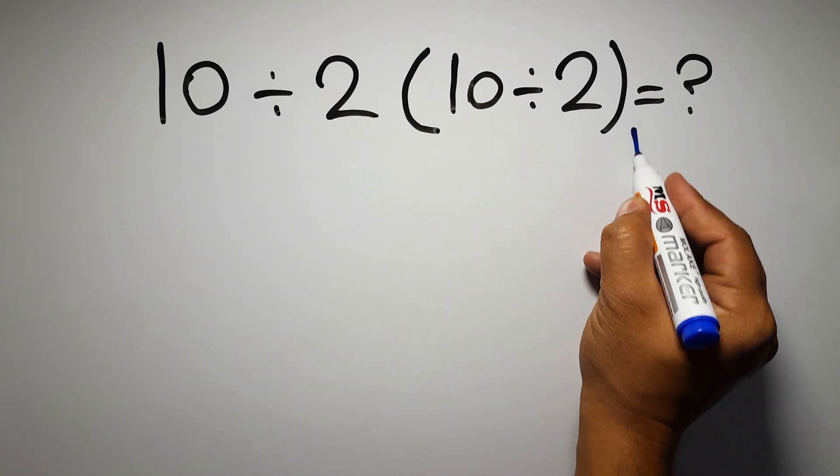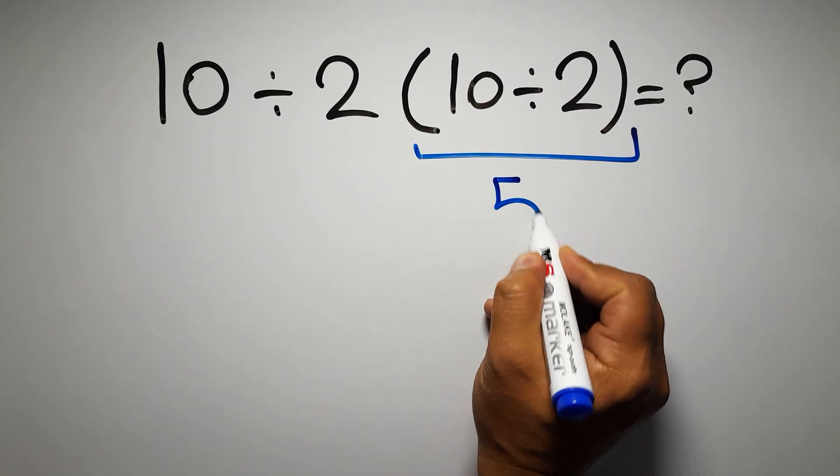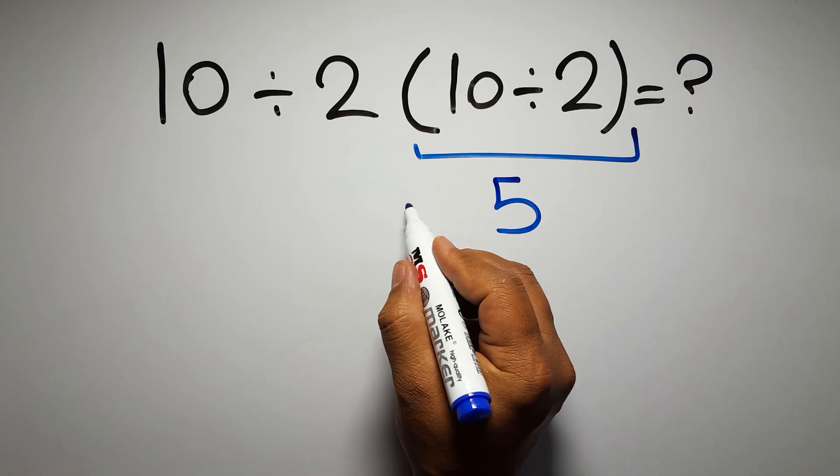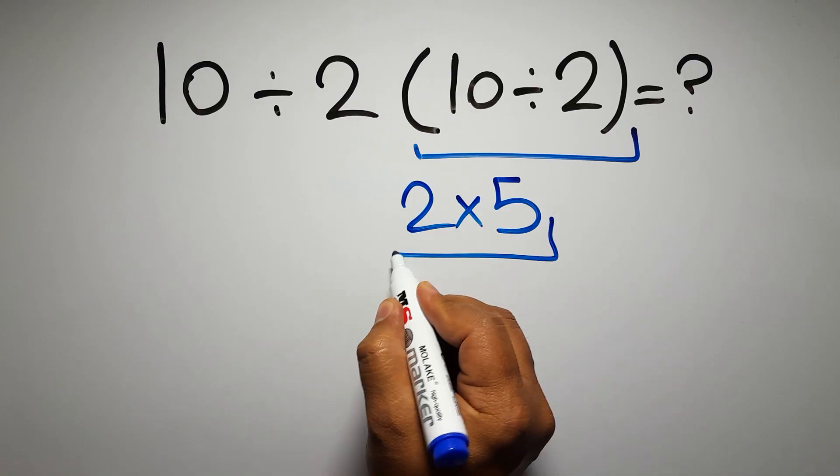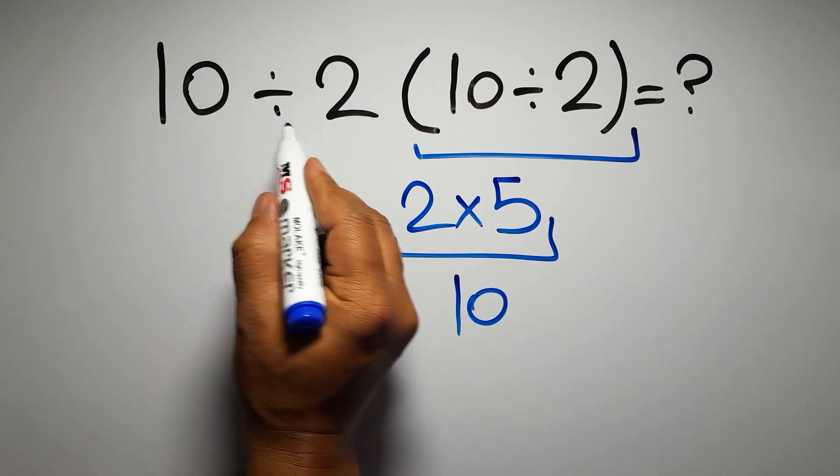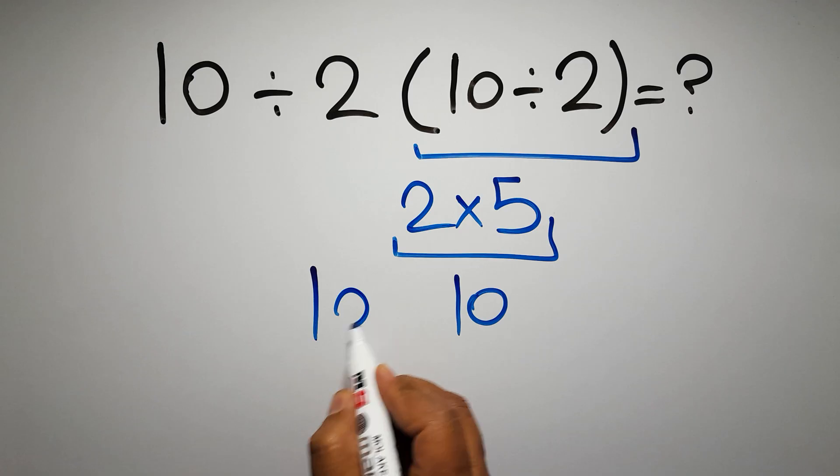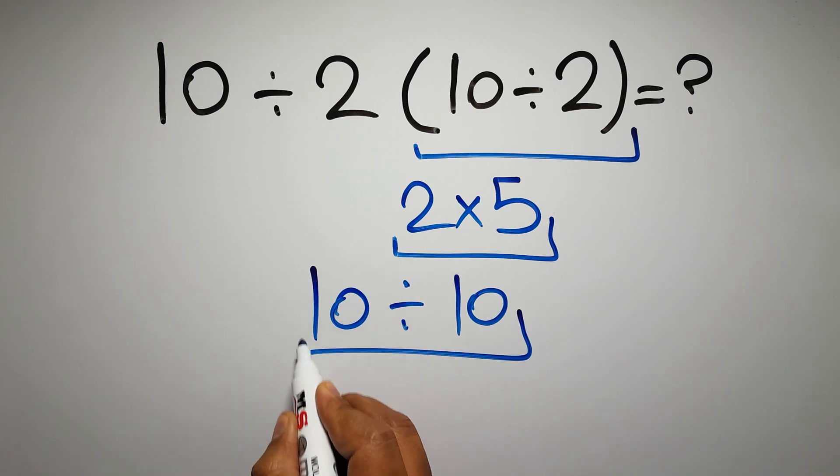10 divided by 2 gives us 5, and 2 times 5 is just 10, so 10 divided by 10, which equals 1. But this answer is not correct.